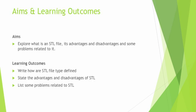The aims and learning outcomes of this episode are quite simple. Firstly, to explore what an STL file is and how it is defined in the ASCII file format, along with its advantages, disadvantages, and some problems related to STL files. In the learning outcomes, hopefully you'll be able to write how the ASCII STL file type is defined for one triangle, state the advantages and disadvantages of STL, and list some problems related to STL.